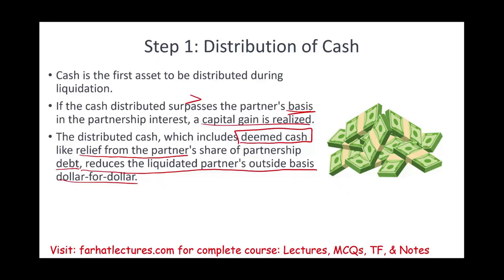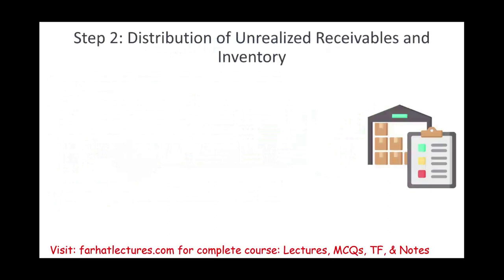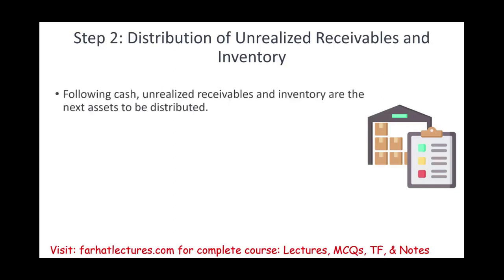If they relieve you from debt, it's the same thing as giving you cash. That reduces the liquidated partner's outside basis dollar for dollar. Remember, basis cannot be below zero — we can go down to zero. Then, if you have any basis left and there is inventory, we distribute the unrealized receivables and inventory. Following the cash, unrealized receivables and inventory are next to be distributed.